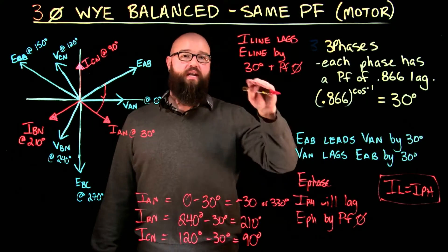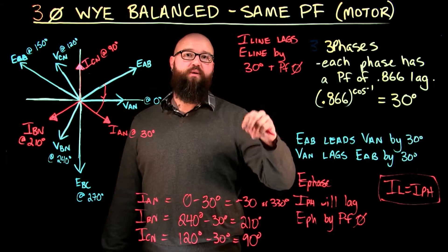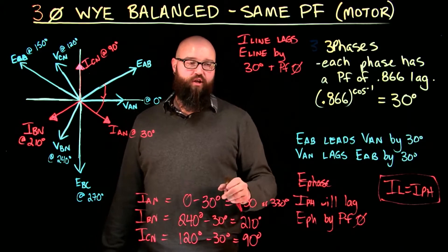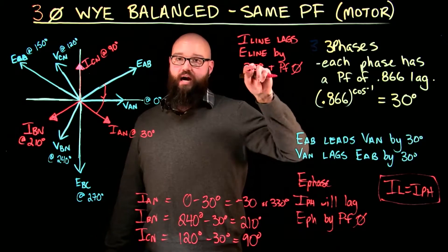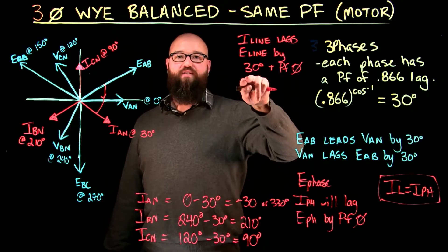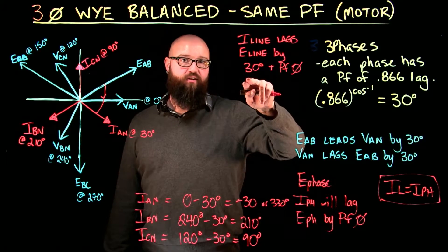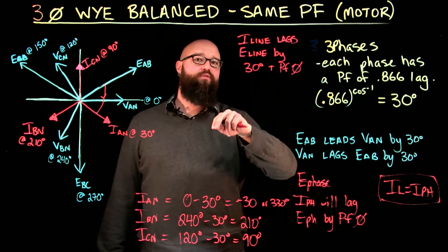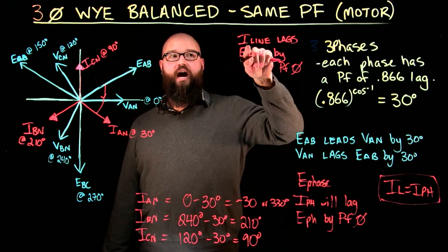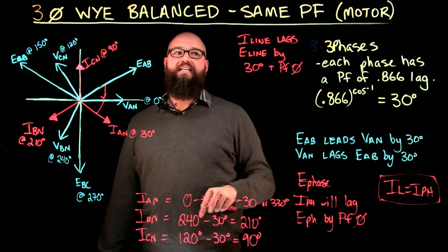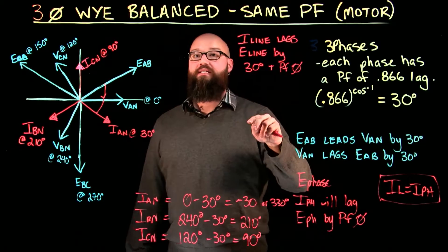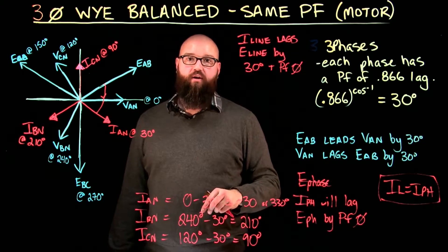In the previous video, it ended up the same as the voltage of the phase because it was unity load and they were in phase of each other. But, in this case, my i phase will lag my v phase by whatever the power factor angle is. And because i line is equal to i phase, I can say i line lags e line by 30 degrees plus that power factor angle.